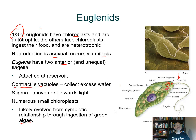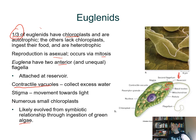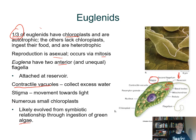One flagellum comes out of the reservoir area, while the other is very short and doesn't actually extend outside the body of the cell. They have contractile vacuoles which contract and pump out excess water. Since these live in fresh water, they're constantly taking in water by osmosis, and the contractile vacuoles are needed to maintain water balance so the organism doesn't risk bursting open.